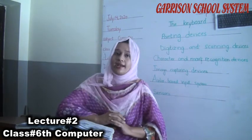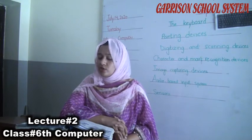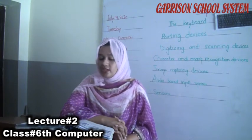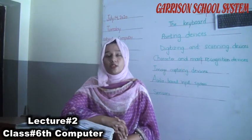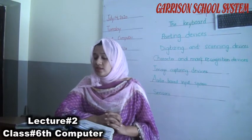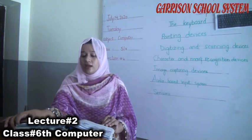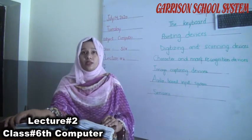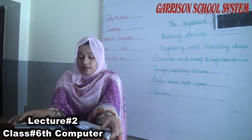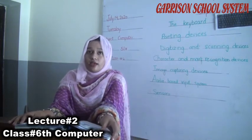Alphabetic keys are used to enter alphabetic data. Numeric keys are used to enter numeric data such as 0, 1, 2, 3, 4. Special keys give instructions to the computer. Pointing keyboards use less space. The keys on braille keyboards are represented by braille characters and are used by visually impaired people.